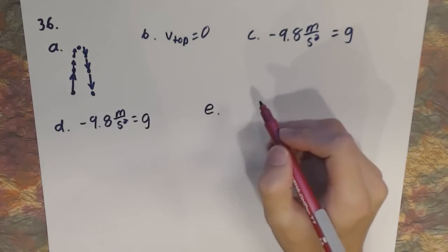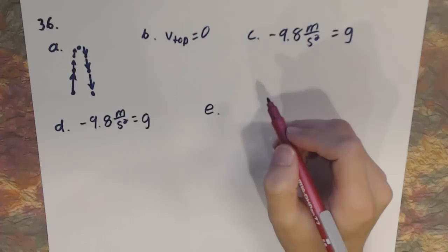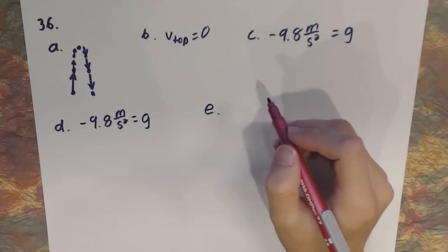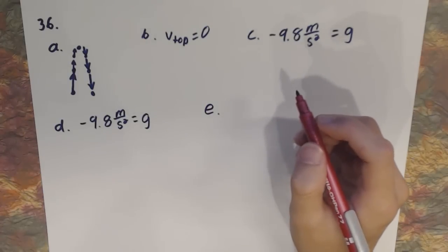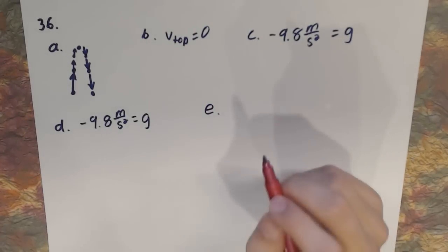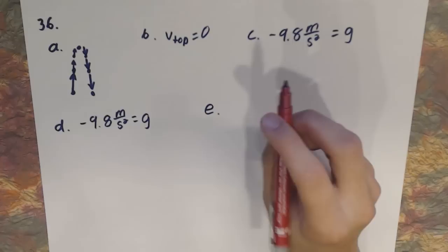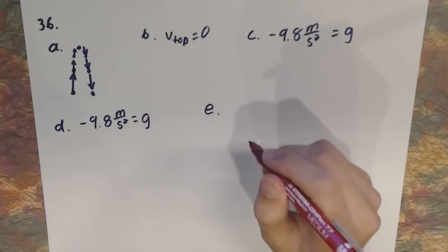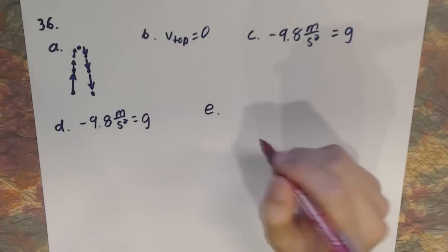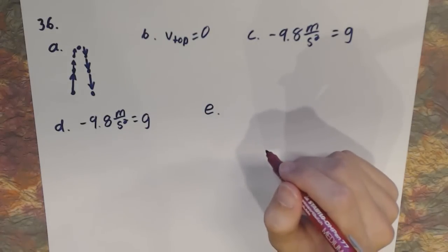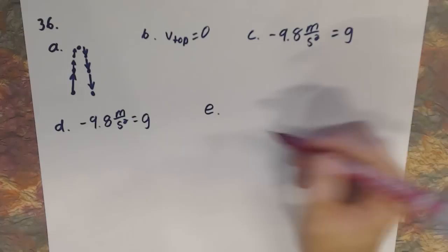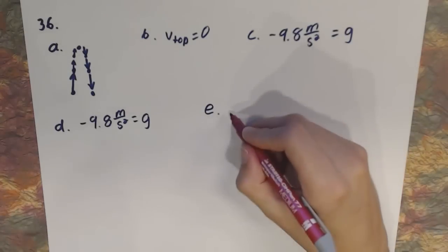Part E asks: does the acceleration increase, decrease, or remain constant? Given that it's uniformly accelerated motion — uniform meaning constant or not changing — the acceleration does not change.